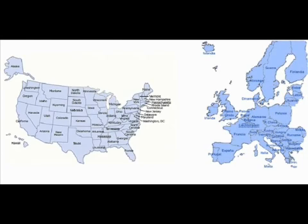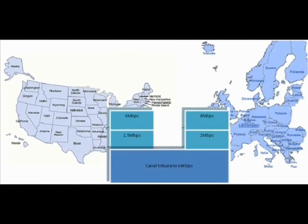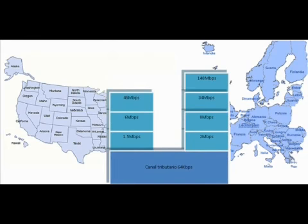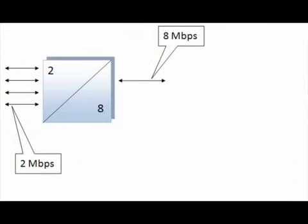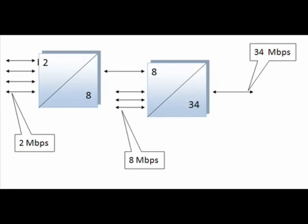Aquí podemos ver las diferentes tasas de transferencia tanto para el sistema CEP europeo como para el sistema ANSI americano. El sistema PDH europeo E1 tiene una tasa de transmisión más alta que la americana, lo que hace que sean incompatibles entre ellos.